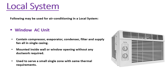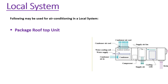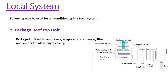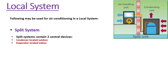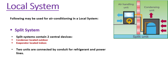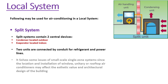Window ACs are mostly used inside homes or small office buildings. A package rooftop unit is a unit with a compressor, evaporator, condenser, filter, and supply fan all in a single casing, but it is mounted on the rooftop and connected to a supply duct to serve a large size zone. A split system uses two separate devices: a condenser located outdoors while the evaporator is located indoors, connected by a conduit for refrigerant and power lines.